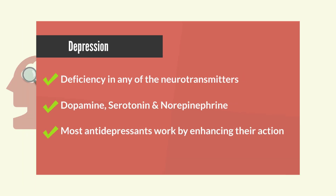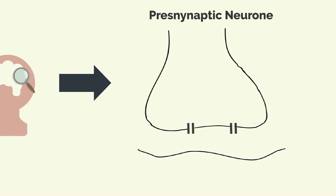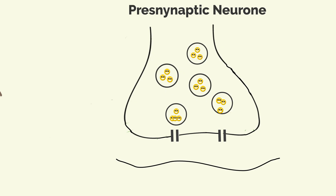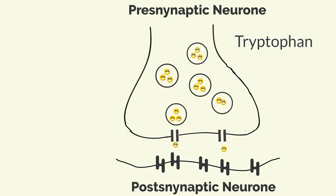So this is a diagram of what is called a synapse. On top is what we call the presynaptic neuron, which contains serotonin. Serotonin is made from an amino acid called tryptophan. The bottom structure is what is called the postsynaptic neuron and houses the serotonin receptors. Under normal circumstances, serotonin is released from the presynaptic neuron and passes through a channel and binds to the serotonin receptors.